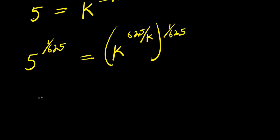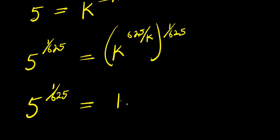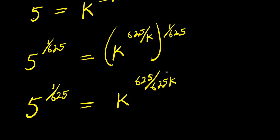So the next step would be to multiply this out. I would have 5 to the power of 1 over (6/5), equals k to the power of (6/5 times 1), which is 6/5 divided by k times (6/5), and we have 6/(5k).